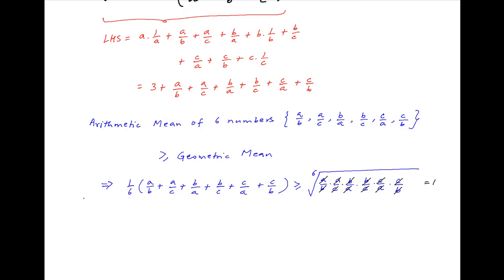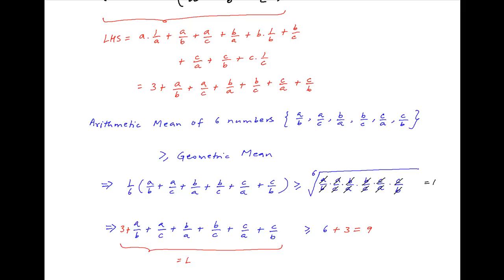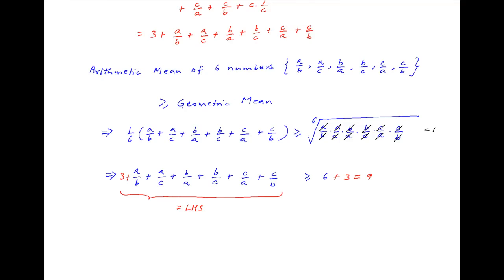Multiplying both sides by 6, we get a/b + a/c + b/a + b/c + c/a + c/b ≥ 6. Now add 3 on both sides. So the right-hand side is equal to 9, and notice that the left-hand side is the same as the left-hand side of the inequality given in the problem.